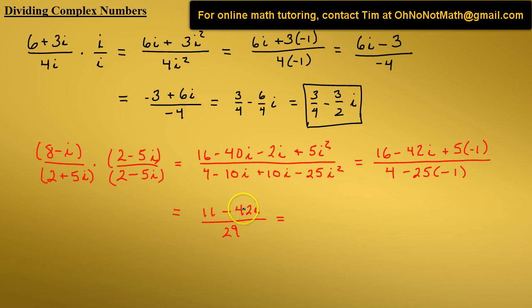Let's rearrange the numerator... Actually this is okay the way we have this. We have the real part before the imaginary part. So we can write this as 11 over 29 minus 42 over 29 i, which cannot be simplified further. That's our final answer.